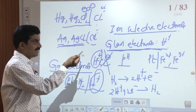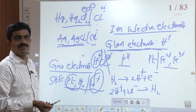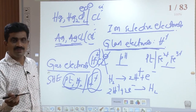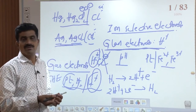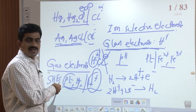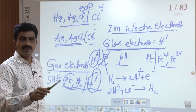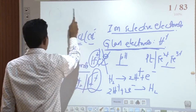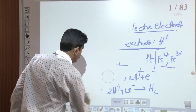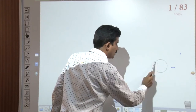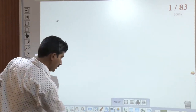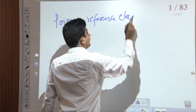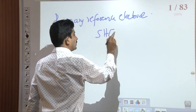We have discussed the construction and working of the standard hydrogen electrode. SHE is a reference electrode — one whose potential is constant and is used to determine the potential of other electrodes. There are two types of reference electrodes: primary reference electrodes and secondary reference electrodes. The only primary reference electrode is the standard hydrogen electrode. With its help, the potential values of other electrodes have been determined.